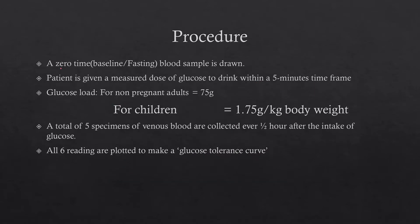The procedure to perform the test is that a zero-time or baseline fasting blood sample should be taken. The patient is then given a measured dose of glucose to drink within a 5-minute time frame. The glucose load for non-pregnant adults is 75g, and for children it is 1.75g per kilogram of their body weight.